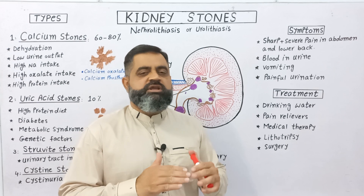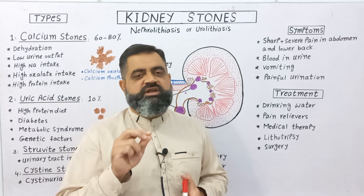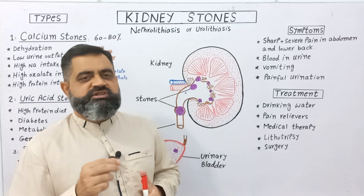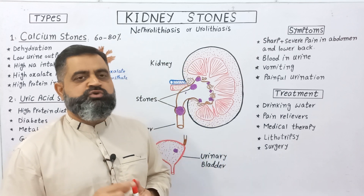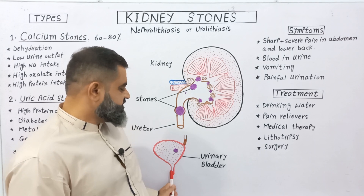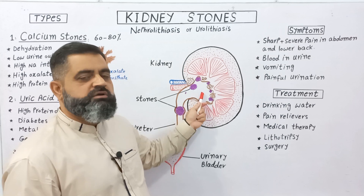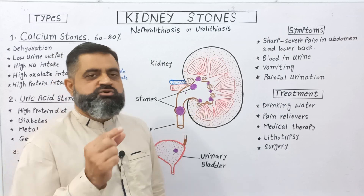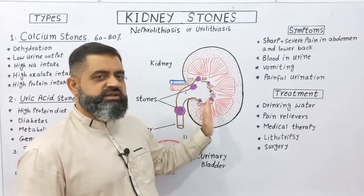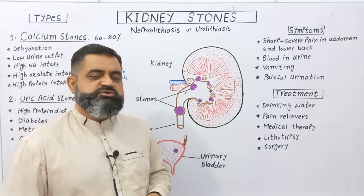Open surgery involves opening the kidney and removing larger stones by hand. There is also a newer technology in which a scope with a camera is used to remove stones. The camera and scope are inserted into the urinary system through the urinary bladder, up to the ureter, and into the kidney. If there are only one or two stones present in the hilum or pelvis region, these stones can be removed using a scope.